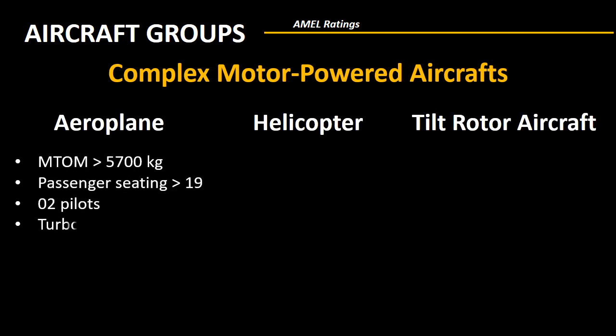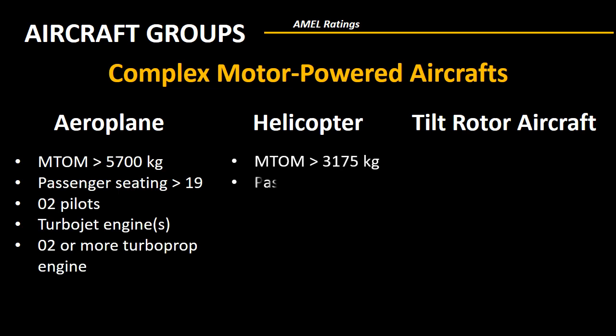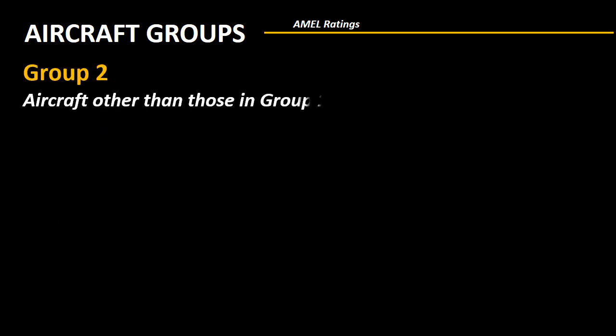All those aeroplanes are complex motor powered aircrafts which have a maximum takeoff mass greater than 5700 kg, or passenger seating capacity greater than 19 passengers, or they require a minimum of two pilots. They can be any airplane with turbojet engines or two or more turboprop engines. Aircrafts requiring a minimum of two pilots are called complex motor powered aircrafts.